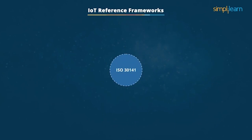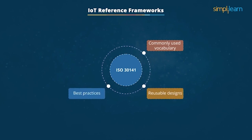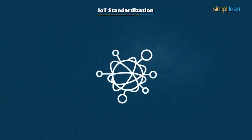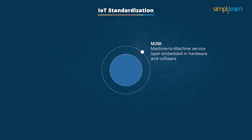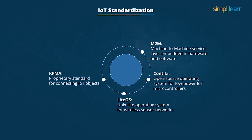The most common IoT framework is ISO 30141, which provides commonly used vocabulary, reusable designs, and best practices for any developer to design an application, along with secure application standards that derive maximum benefit and reduce risks. Some key IoT standards include: M2M — a machine-to-machine service layer that can be embedded in hardware and software to connect devices; Contiki — an open-source operating system for low-cost, low-power IoT microcontrollers; LiteOS — a Unix-like operating system for wireless sensor networks; Random Phase Multiple Access — a proprietary standard for connecting IoT objects; and Sigfox — a proprietary low-power, low-throughput technology for IoT and M2M communications.